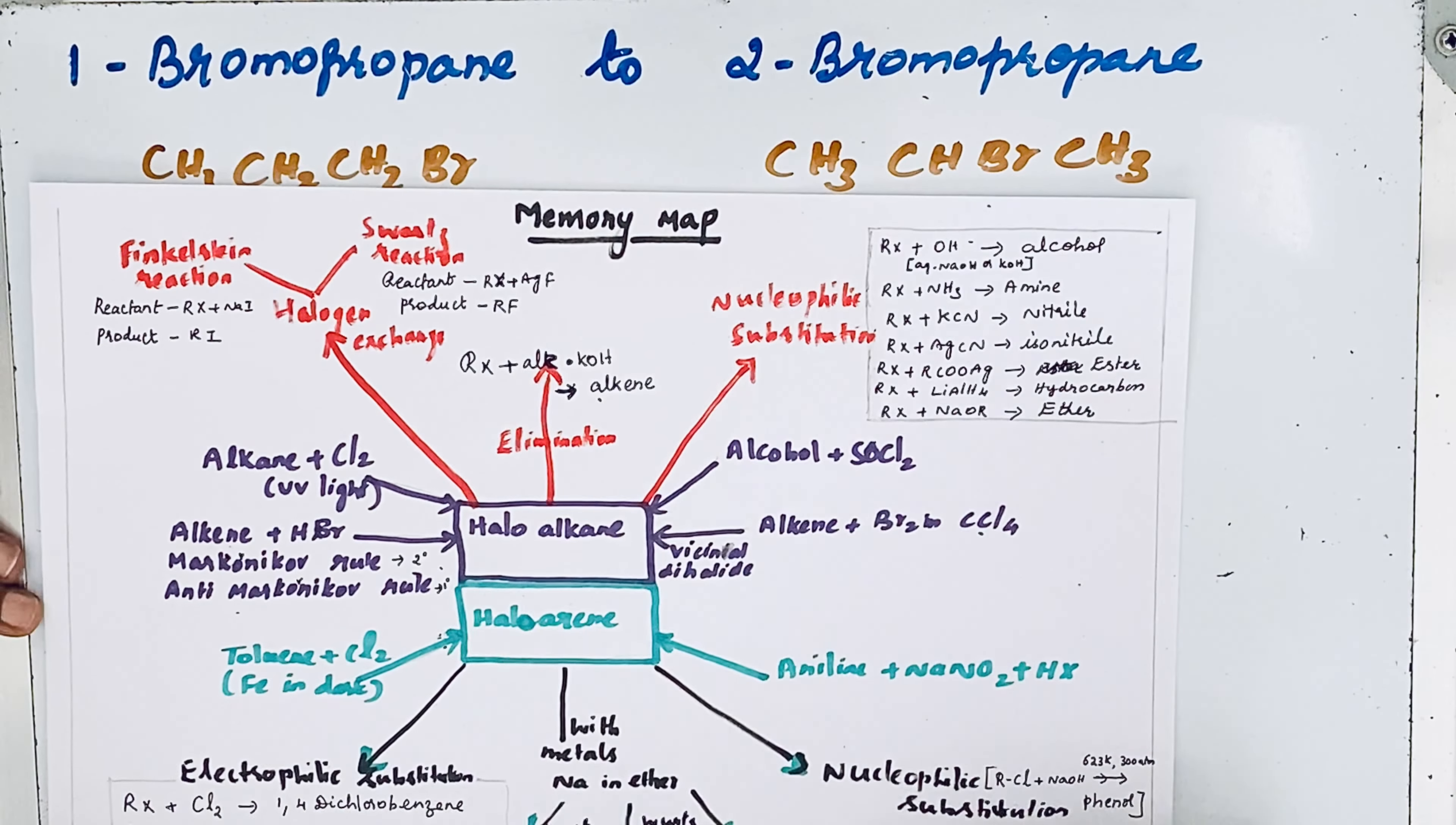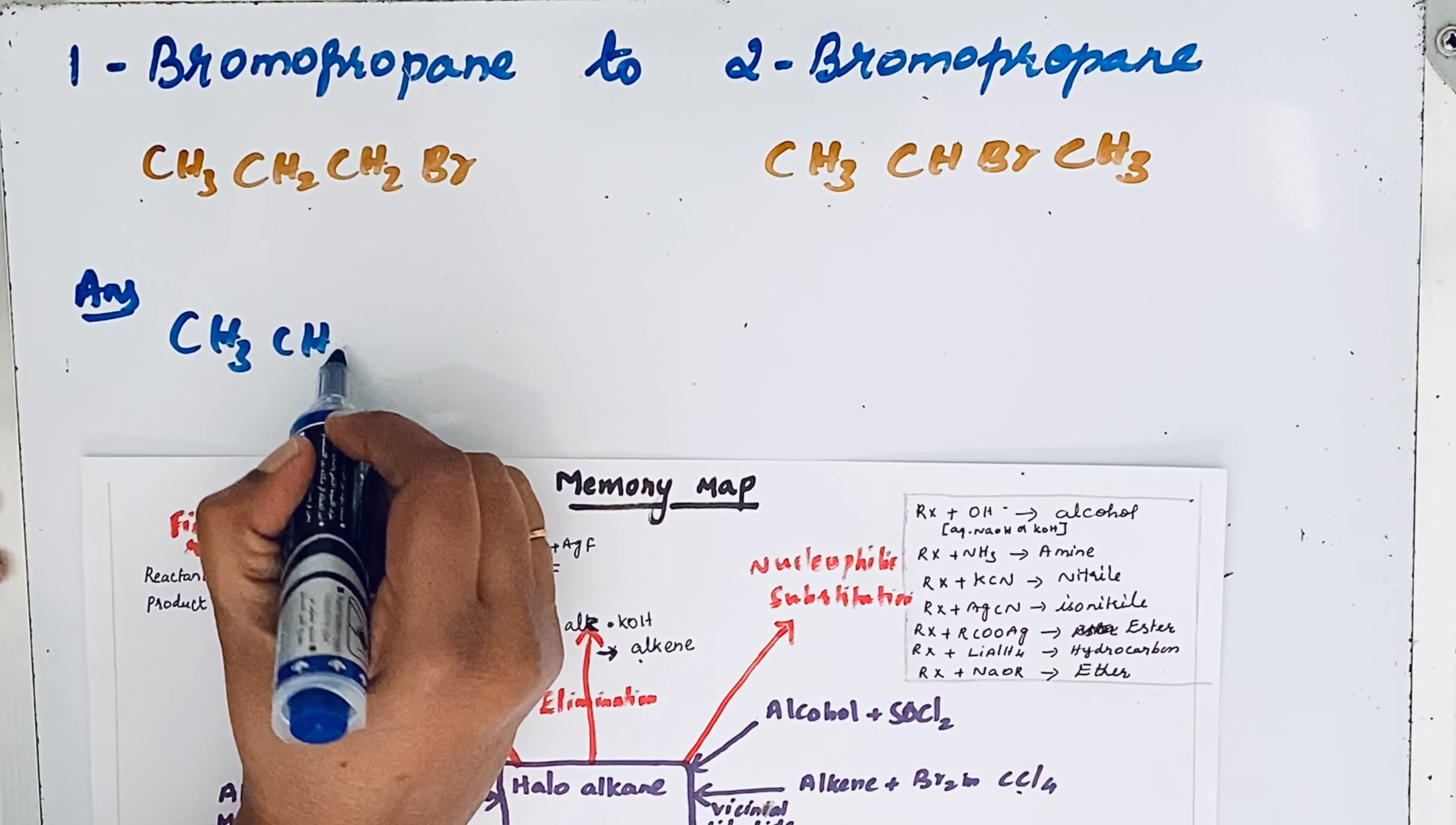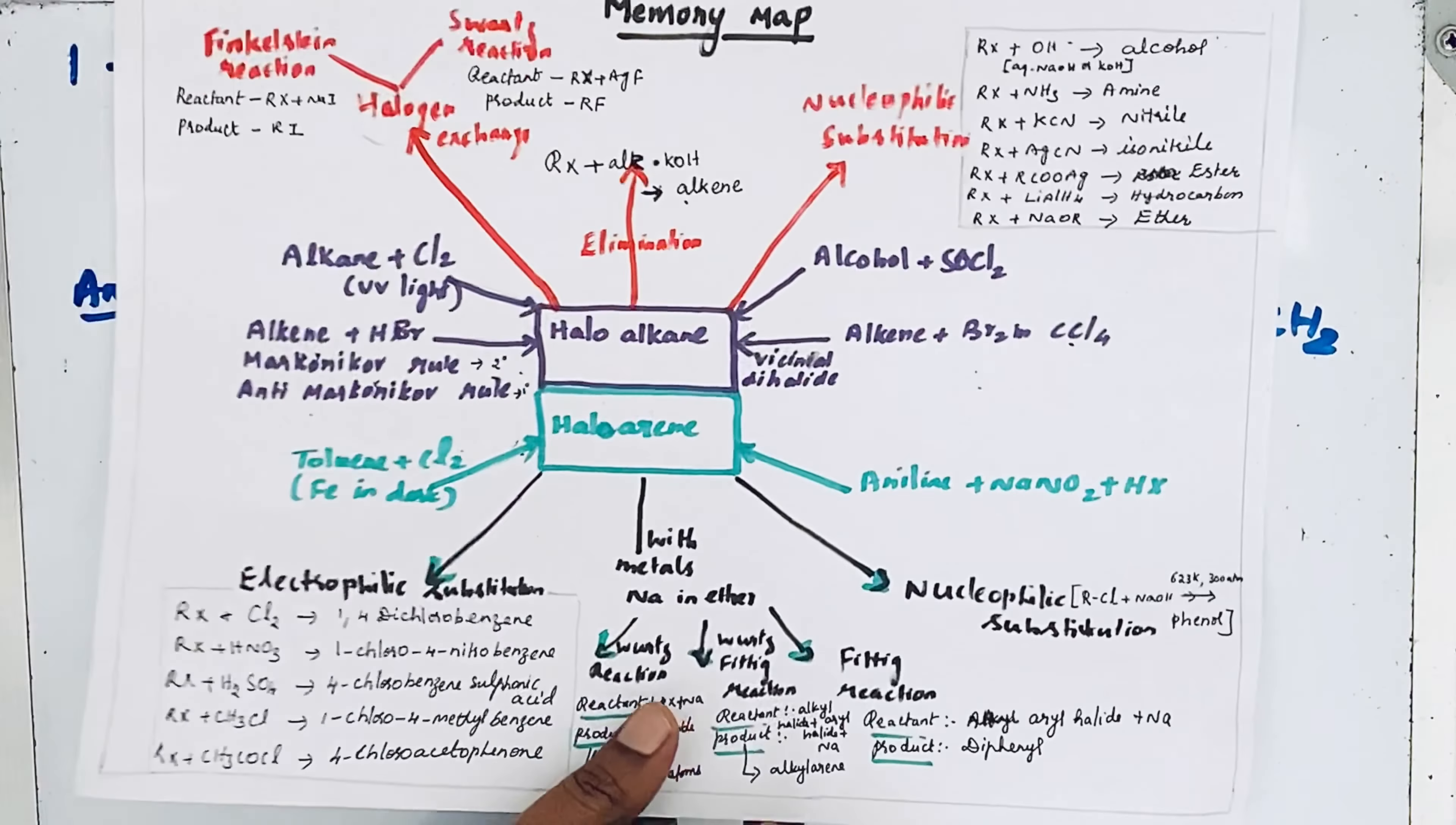With alcoholic KOH, elimination reaction takes place—dehydrohalogenation. Hydrogen and bromine is replaced by elimination. Now 1-bromopropane is converted into propene alkene.